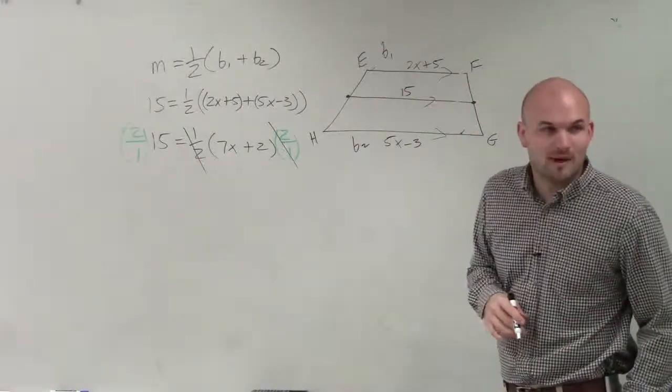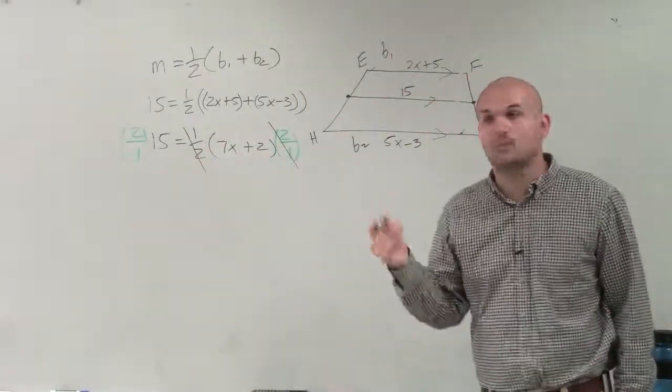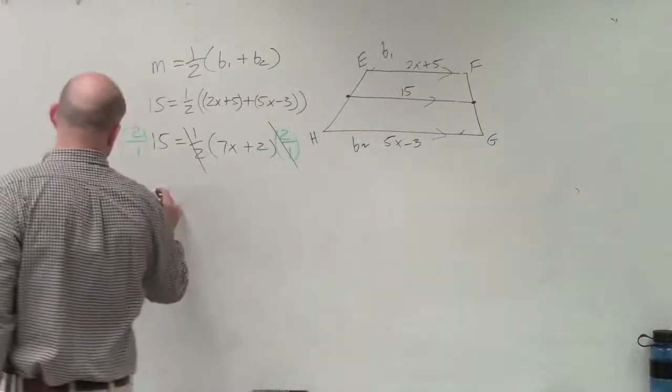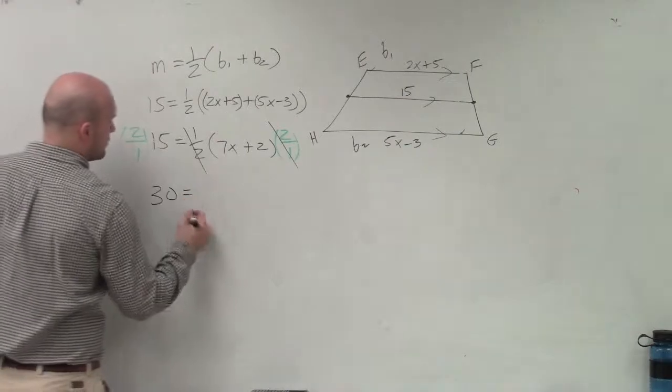So we can multiply by our reciprocal. Obviously, any number multiplied by its reciprocal is going to be a 1. So that's just going to leave us with 7x plus 2. 2 over 1 times 15 is going to be 30.